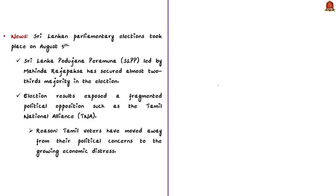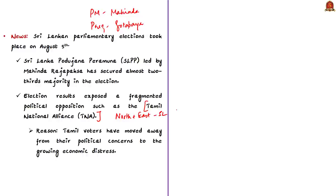The Rajapaksha brothers are at the helm of affairs of Sri Lanka — Mahinda Rajapaksha is the PM and Gotabaya Rajapaksha is the President. The election results have exposed a fragmented political opposition in Sri Lanka, especially among the parties representing the minority Tamil population. One of the major parties representing the Tamils was the Tamil National Alliance, which represented Tamils in Northern and Eastern Sri Lanka since the end of the civil war in 2009. But in the recent elections, their representation has largely reduced — they have just won 10 seats in the 225-member parliament. Tamil voters chose candidates from hard-lined Tamil nationalist groups critical of the Tamil National Alliance, and even elected candidates from parties aligned to Rajapaksha's party.